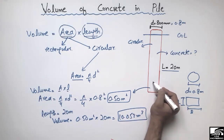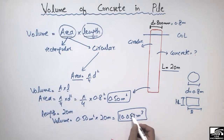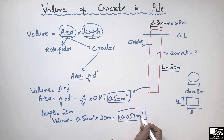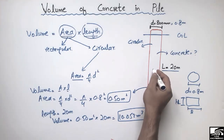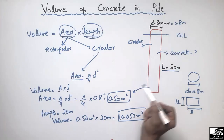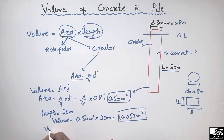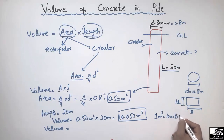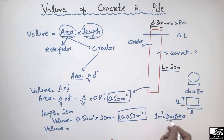Multiplying these two we get a volume of 10.053 cubic meters. So this is the volume of concrete needed for this circular pile. Now if you want to convert this into liters, 1 cubic meter equals 1000 liters.